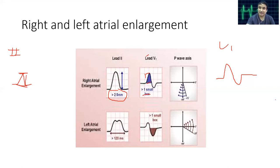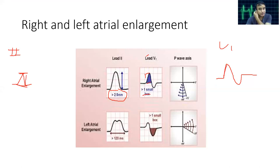In Lead V1, there is a biphasic pattern of the P wave. The first upward deflection is due to the right atrium and the second inverted deflection is due to left atrial depolarization. In a patient with right atrial enlargement, there is an increase in amplitude of this positive wave, usually more than 1.5 mm.